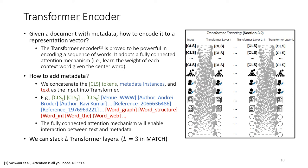And the question is how to add metadata. Given the fully connected attention mechanism, we can simply concatenate all the CLS tokens, metadata instances, and text as the input into transformer. We give an example here. This is the paper Graph Structure in the Web.